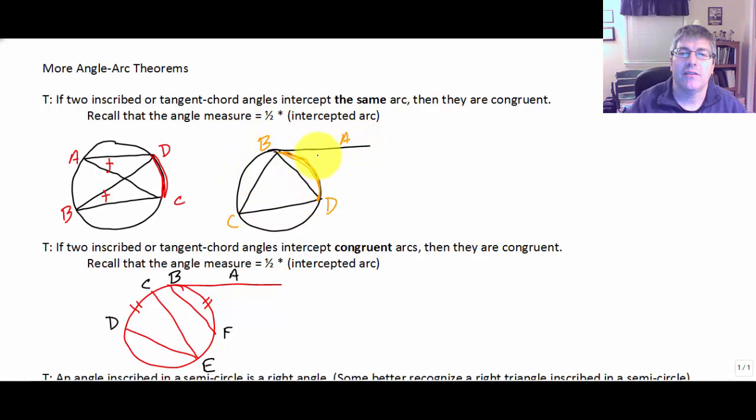And you can see here in the second diagram, the same works for an inscribed angle, like angle BCD, and a tangent chord angle. The inscribed angle and the tangent chord angle, angle ABD, intercept the same arc.